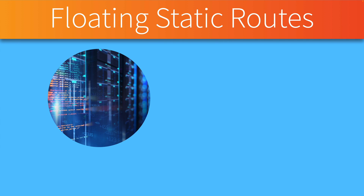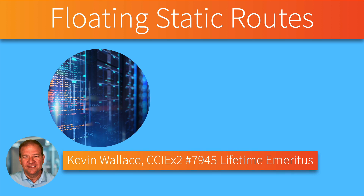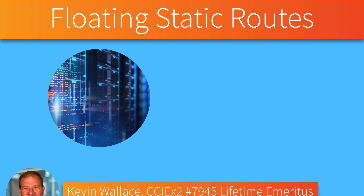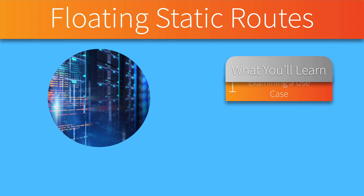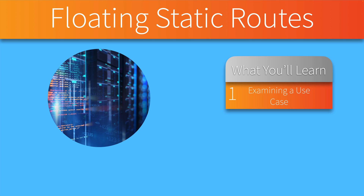In this week's video, we're going to take a look at floating static routes. My name is Kevin Wallace and I want to welcome you back to the channel. A floating static route is a route that is not always active — it can act as a standby route in case a primary route learned by a dynamic routing protocol were to go away for some reason.